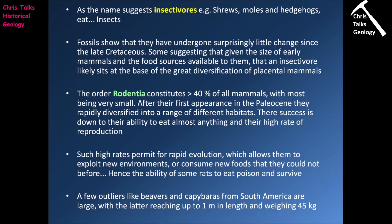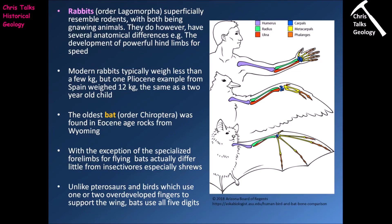A few outliers of the rodent group, like beavers and capybaras from South America, are large, with the latter reaching up to one metre in length and weighing up to 45 kilograms. The rabbits — order Lagomorpha — superficially resemble rodents with both groups being gnawing animals, but they have several anatomical differences, one of the main ones being the development of powerful hind limbs used for speed. Modern rabbits typically weigh less than a few kilograms, but one Pliocene example from Spain weighed 12 kilograms — about the weight of an average two-year-old child.